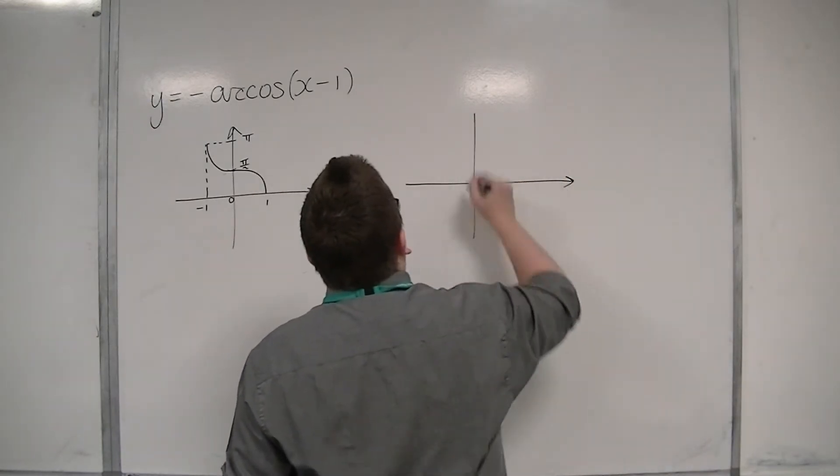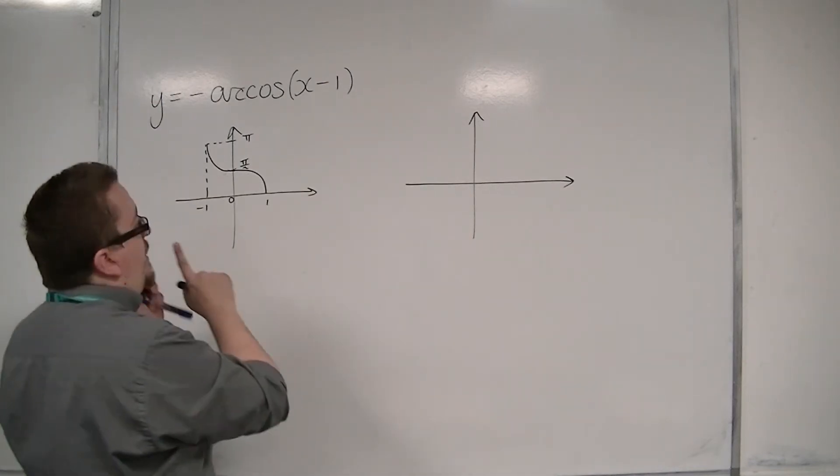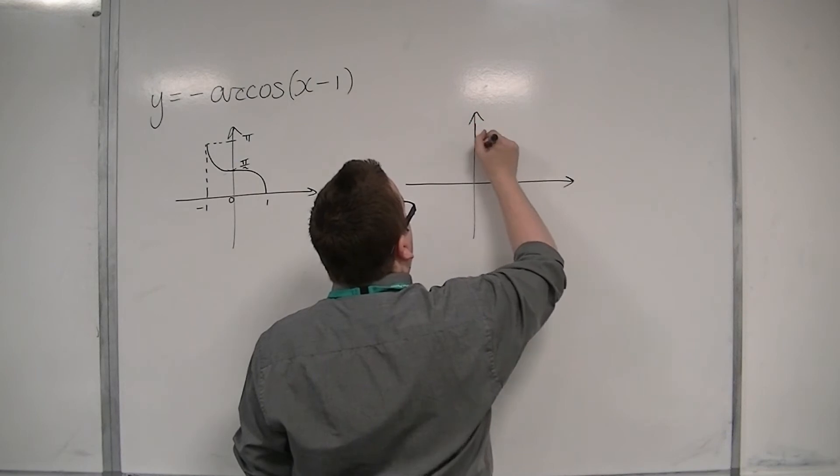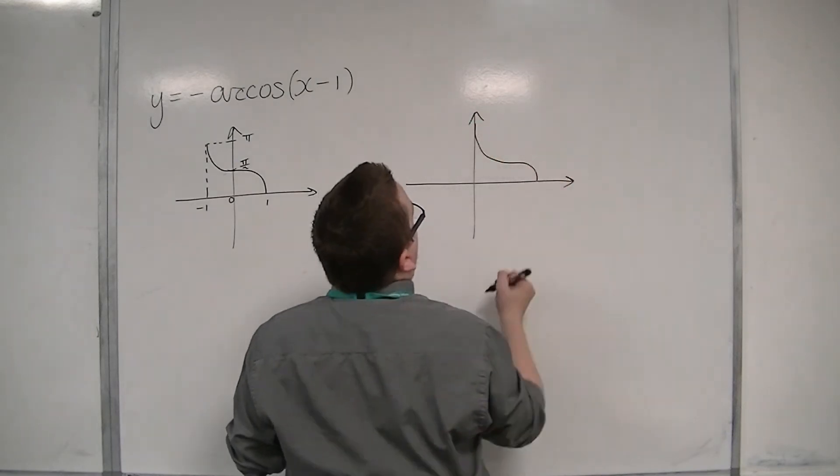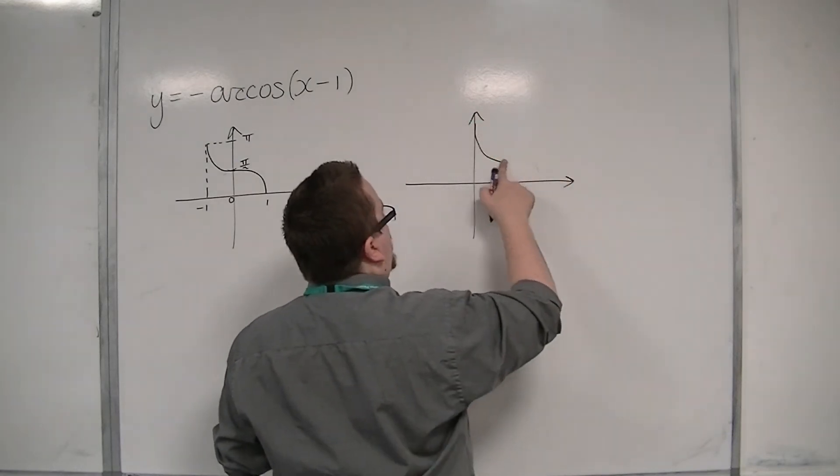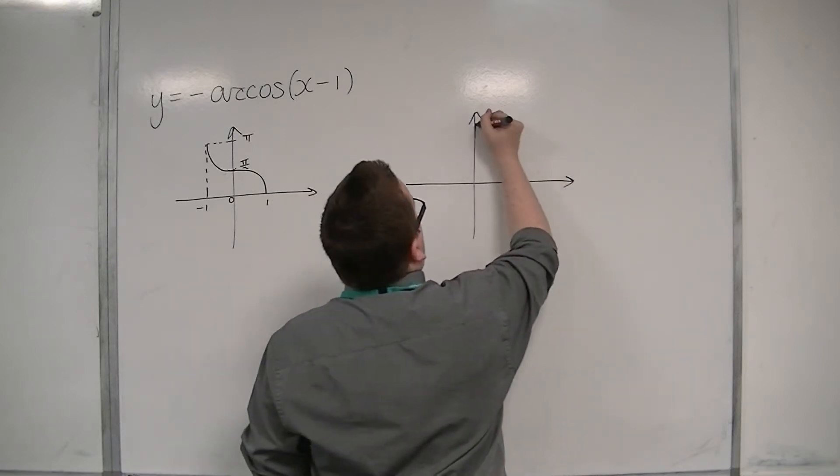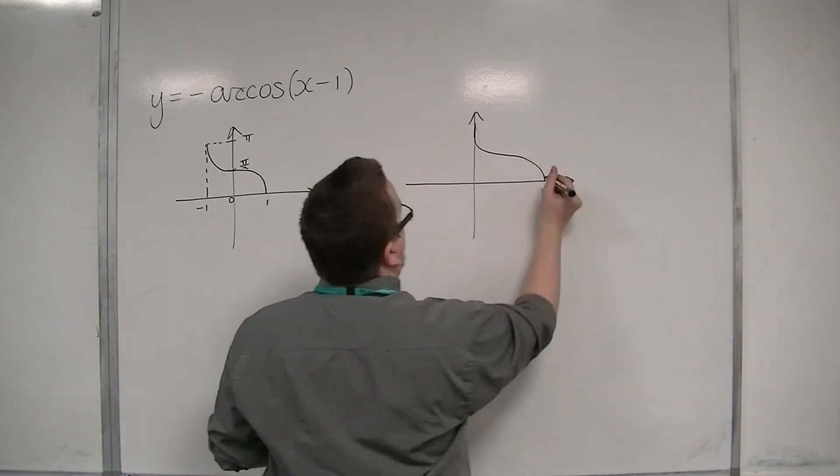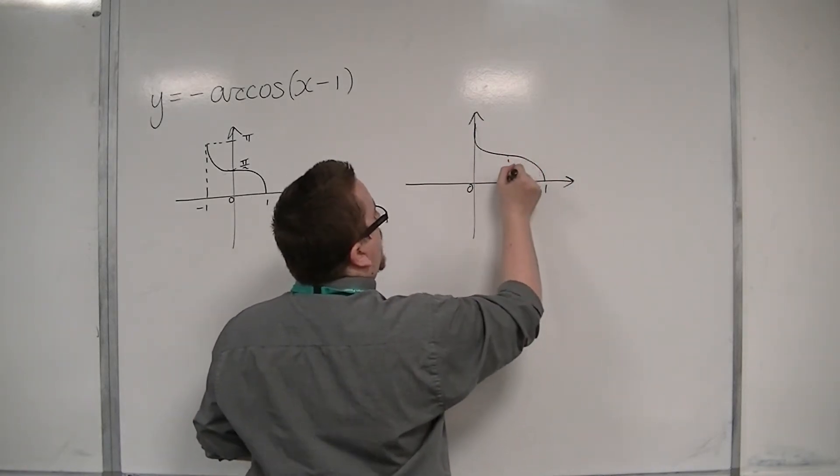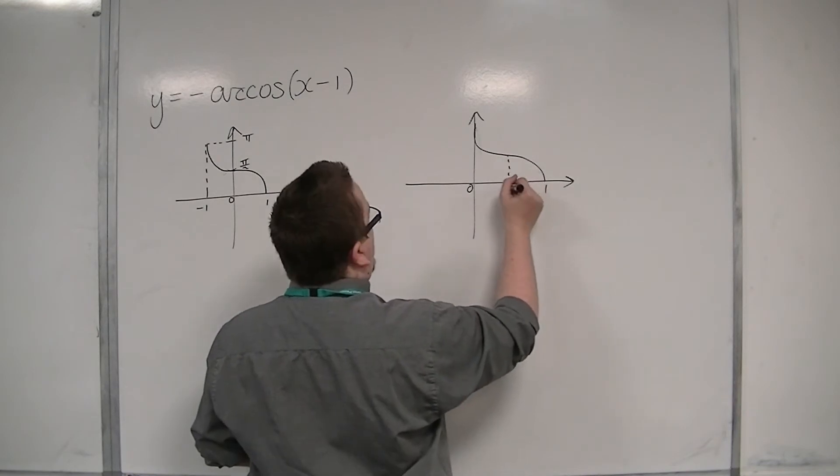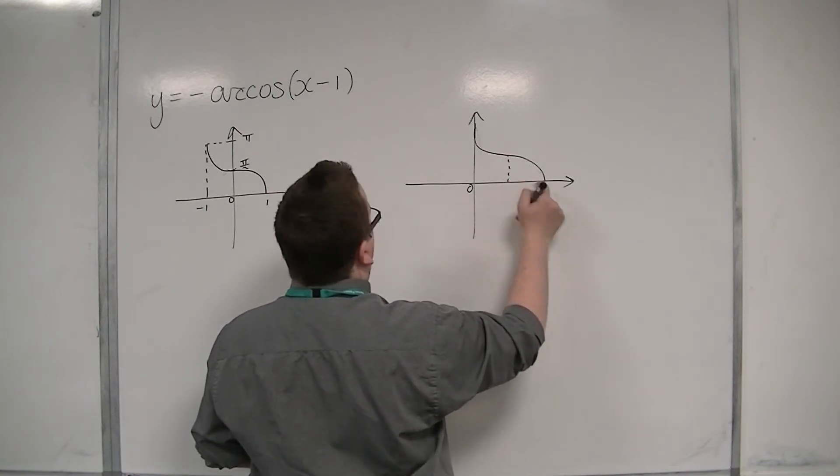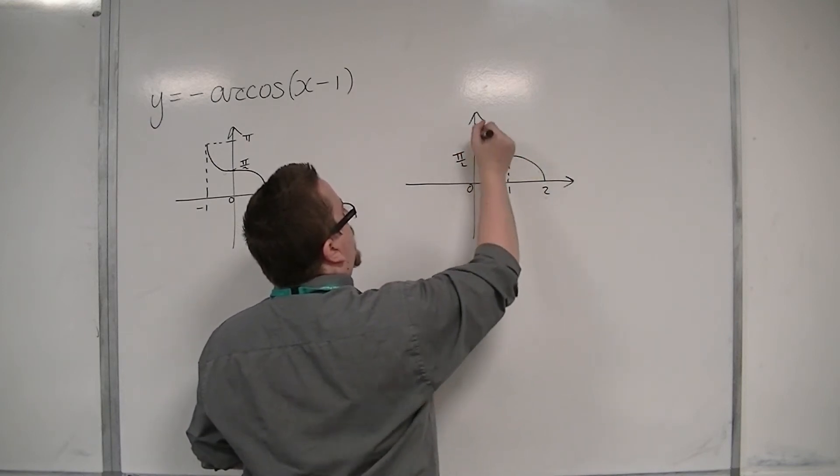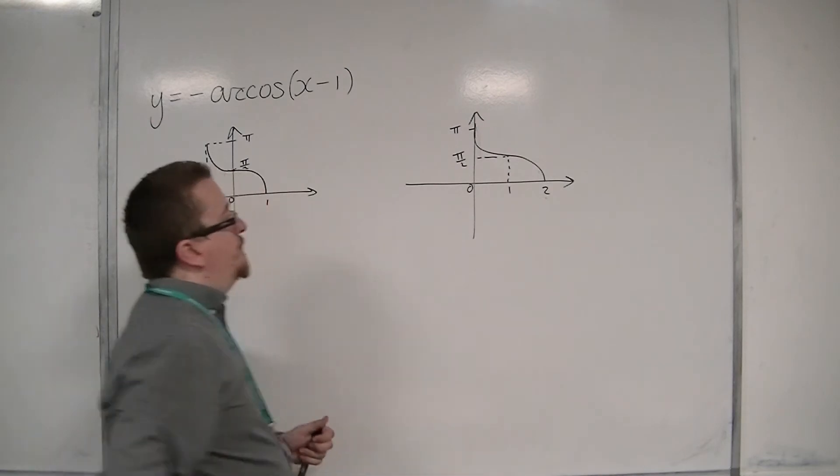So, if it's shifted 1 to the right, let's do the translation first. That was very poor. Let me try that again. Not doing too well with my sketches today. Okay, that'll have to do. So, this is going from 0 to 2. That point is 1, that's pi over 2, and that point is pi.